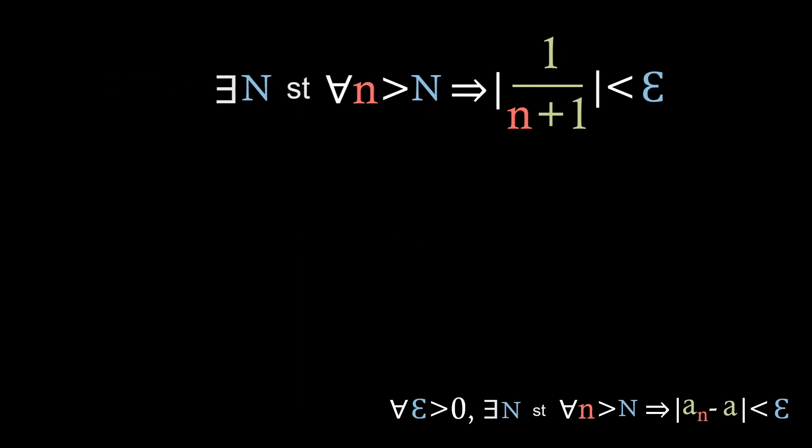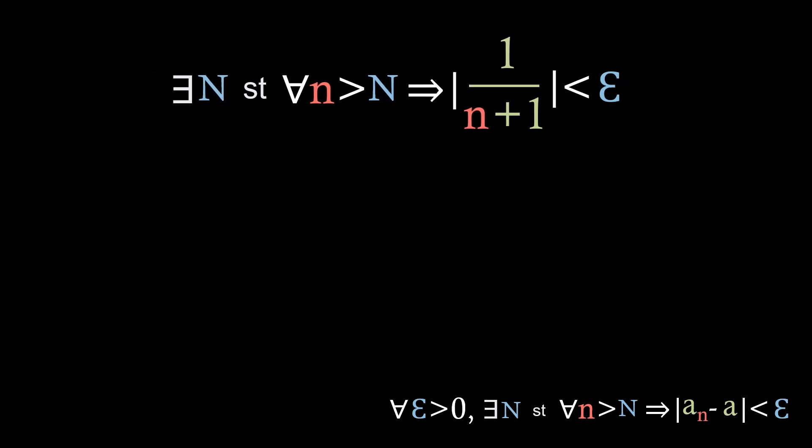So how do we go about finding this big N? Well the first we're going to do is look at that last little expression: the absolute value of 1 over n plus 1 is less than epsilon. Let's start by looking at the absolute value. Well we know this is positive because the index value little n is positive itself, so we know it's going to be less than the non-absolute value term.